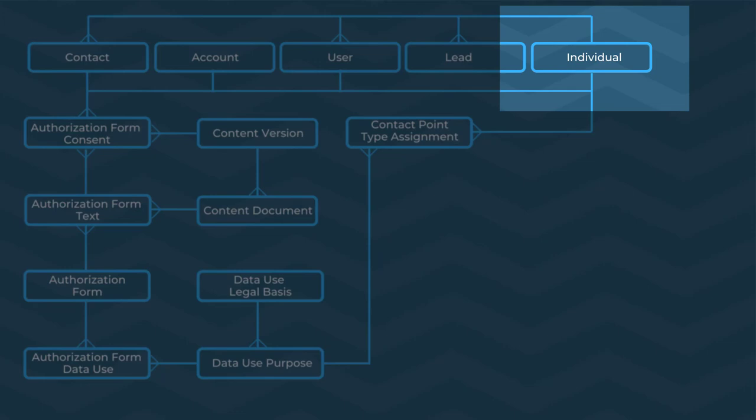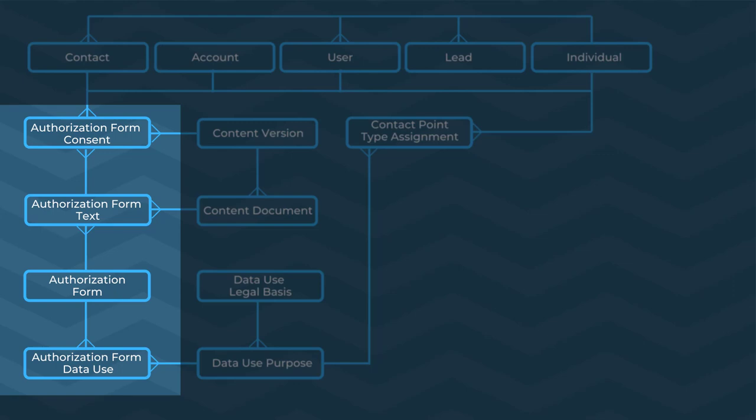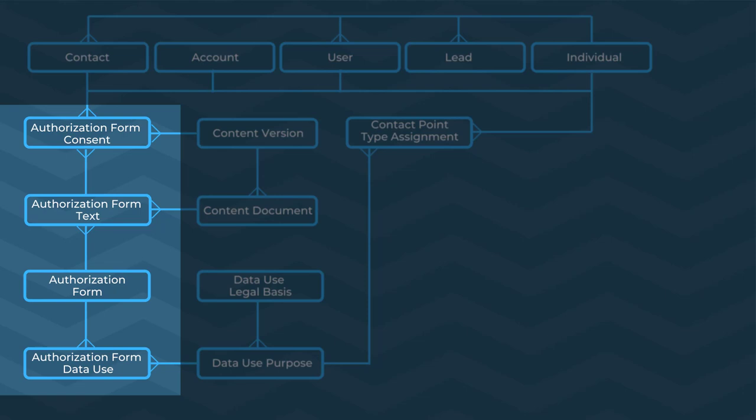Let's do a one-minute recap of what Salesforce has included in their new feature set. The first object we went over was the individual object, which stores data important to consent management like birth date or the data preferences of the individual. Second is the authorization form objects, which keep track of data related to authorization forms such as terms of service, privacy policy, and other consent forms. The last object we covered — which is also a really important one — is the contact point type assignment object. And remember, every business is different, so don't be shy about picking and choosing the objects that are useful to you and ignoring those that aren't.